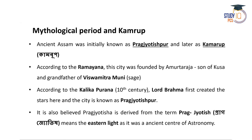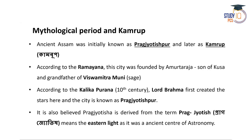Let us start with the ancient history of Assam — the mythological period and Kamrup. The ancient Assam was initially known as Pragjyotishpur, a very important fact. It later came to be known as Kamrup. According to the Ramayana, the city of Pragjyotishpur was founded by Amurta Raja, who was the son of Kukhamuni and grandfather of Vishwamitra Muni.